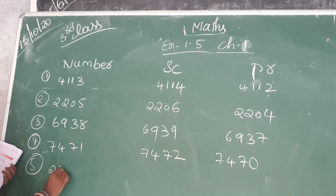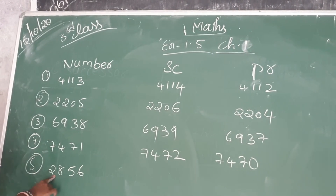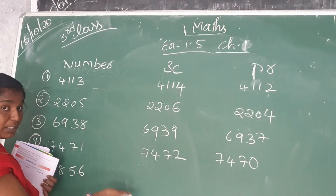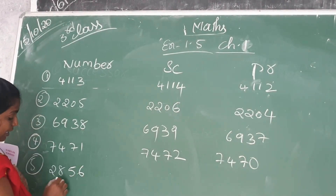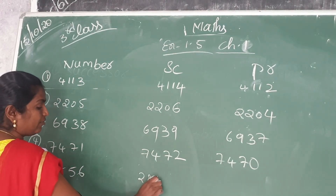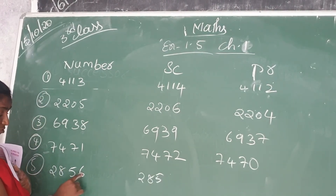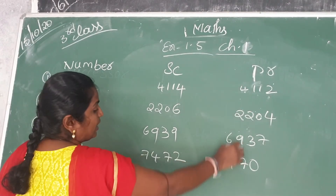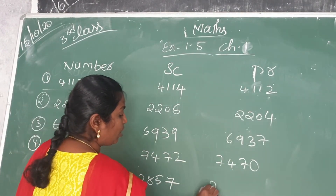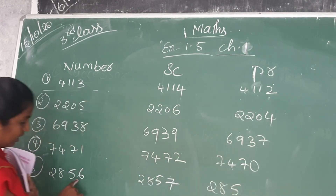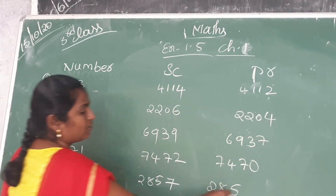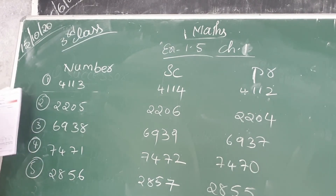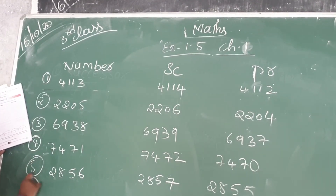Next, fifth one: 2856. What is the successor of 2856? After number — 56's after number is 57, so the successor is 2857. Predecessor means before number — before 2856, 56's before number is 55, so the predecessor is 2855. Like this, you have to write the successors and predecessors of the numbers.